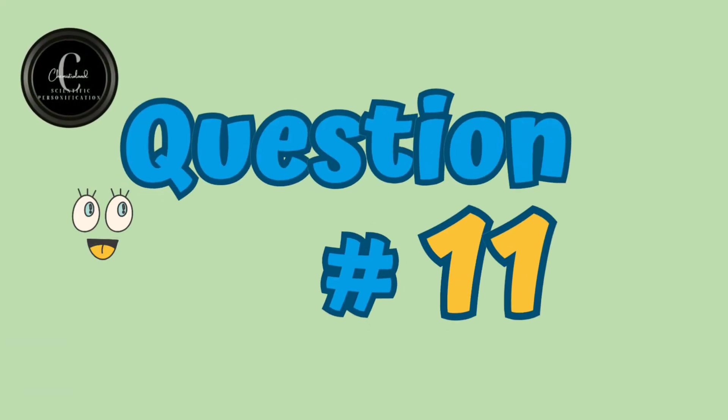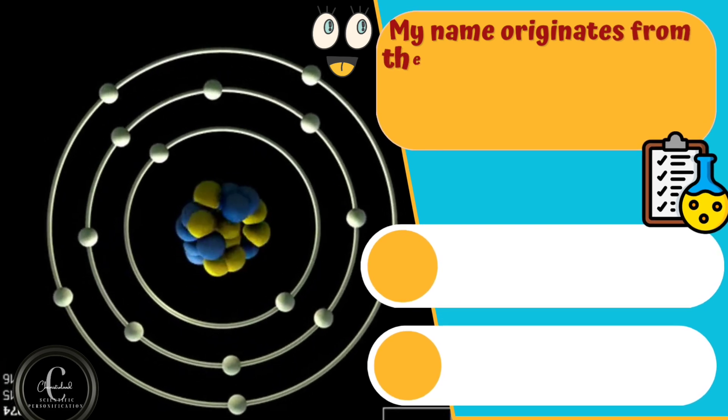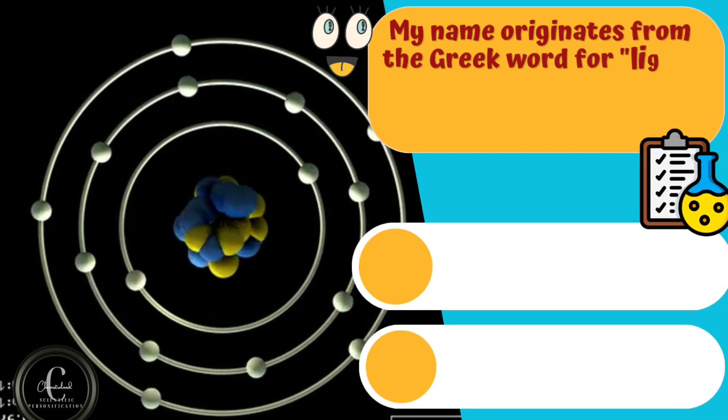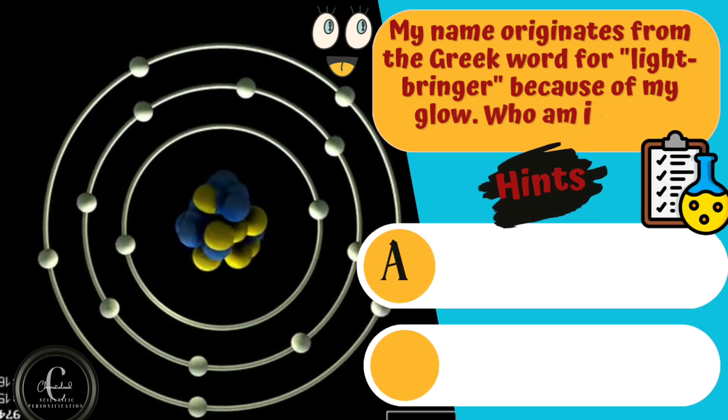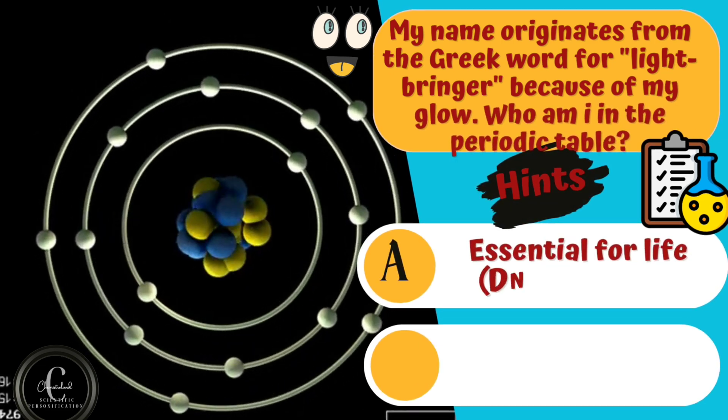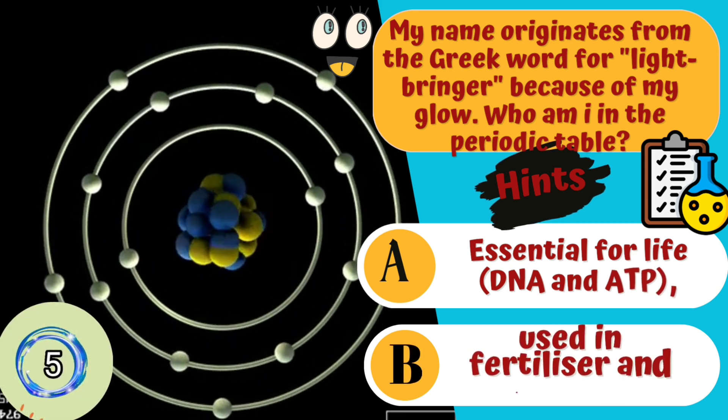Here is question number eleven. My name originates from the Greek word for lightbringer because of my glow. Who am I in the periodic table? Hints are A. Essential for life, DNA and ATP. B. Used in fertilizer and matches.